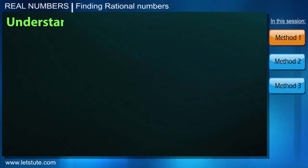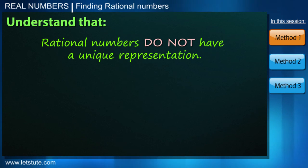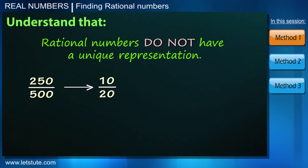So one more thing that we need to understand here is that the rational numbers do not have a unique representation. For example, the rational number can also be written as 250 upon 500, or 10 upon 20, or 5 by 10, or in more simplest form we can write it as 1 upon 2.